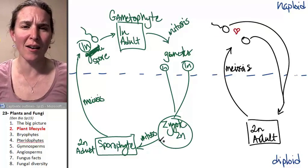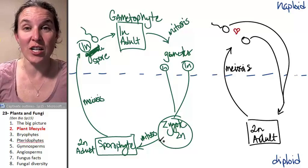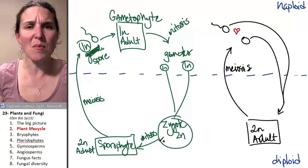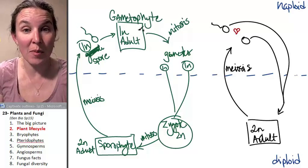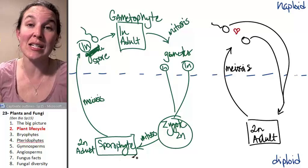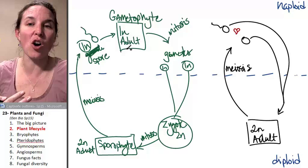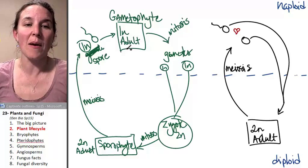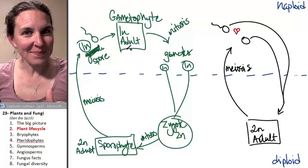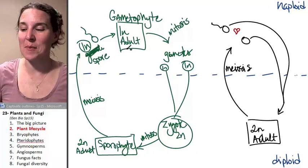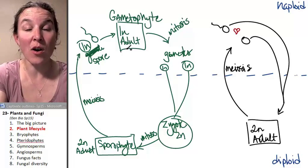Seriously, I mean, that's phenomenal. It's called an alternation of generations life cycle. And it makes sense because in one generation, you have a haploid grown up. And in the next generation, you have a diploid grown up. And then in the next generation, you have a haploid grown up. And so you get this alternation of generations. All plants do it.